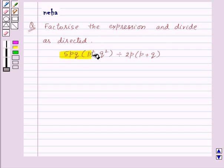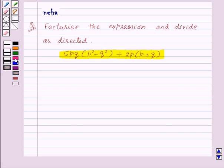5pq into p square minus q square divided by 2p into p plus q. Let's see the solution.